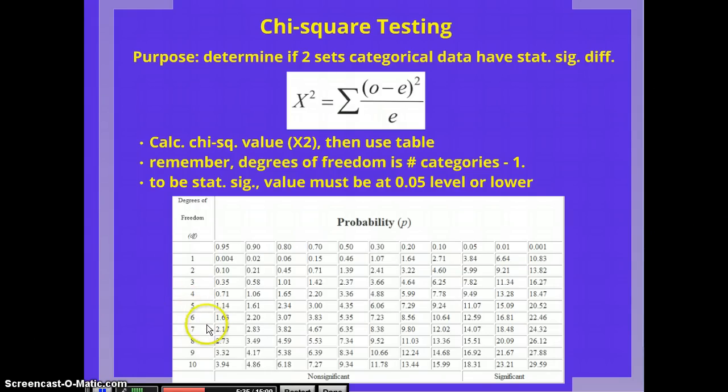Remember that the degrees of freedom is one less than the number of categories. So when we did the M&M activity, if there are five different color M&Ms, that means the degrees of freedom would be four. And what you look for is this line of 0.05. If your probability is less than 0.05, then it is statistically significant.